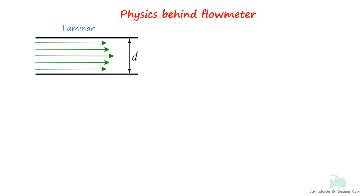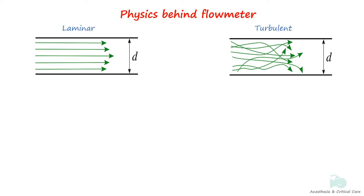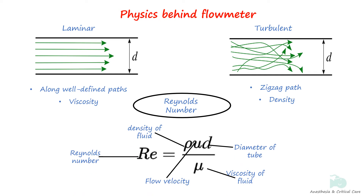Fluid flow can be either laminar or turbulent. Laminar flow is the movement of fluid particles along well-defined streamlines that are straight and parallel; viscosity is the determining factor. Turbulent flow is defined as flow in which fluid particles move in a zig-zag way, often present where there is a sharp bend or irregularity causing local increases in velocity; density is the determining factor. The Reynolds number is a dimensionless number representing the ratio of inertial force to viscous force, determining whether flow is laminar or turbulent. A Reynolds number below 2000 indicates laminar flow; 2000 and above signifies turbulent flow.